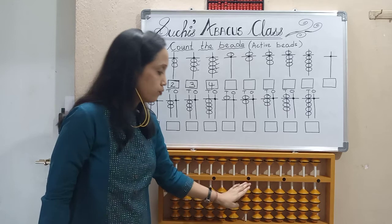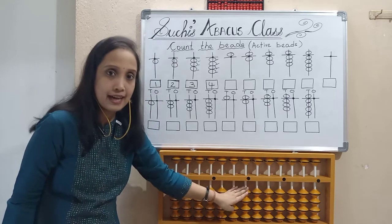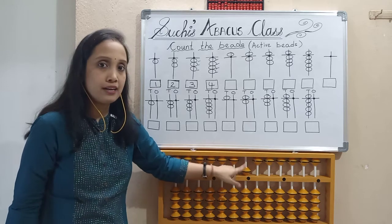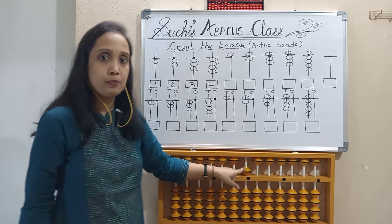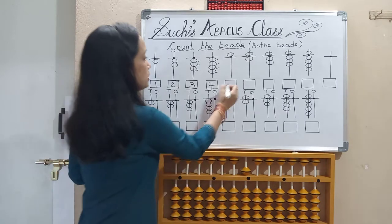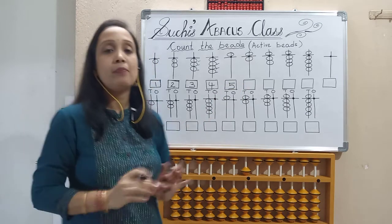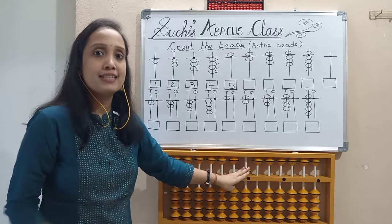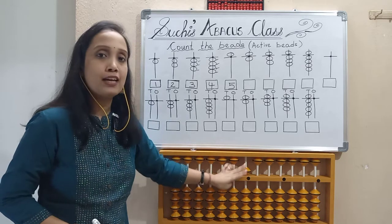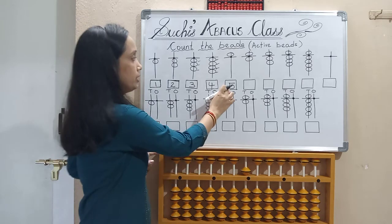Now, if these 4 lower beads are outside and only one upper bead comes down, that means the value is 5. This is the most important bead in our abacus. We have to always keep in mind that this single upper bead value is 5. So we write it as 5.